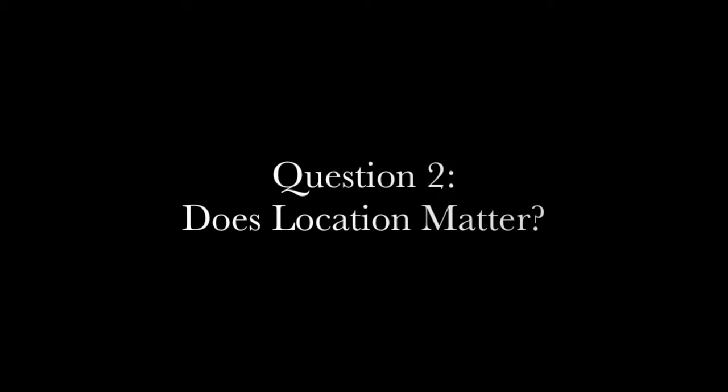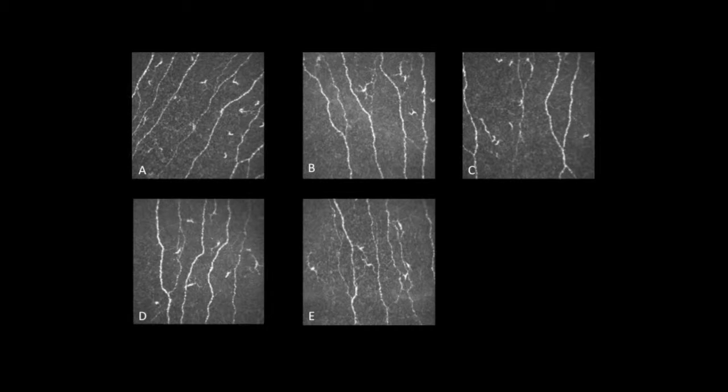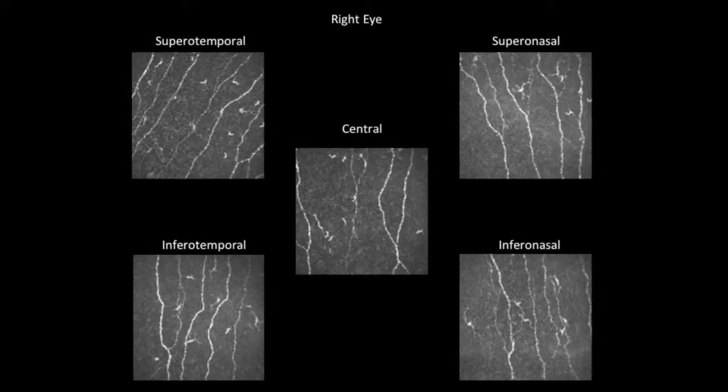The next question is whether different corneal locations have different corneal nerve counts. Here we have five photographs, each from a different location on the cornea. Looking at each grossly, we can see that the nerve counts are obviously different. Looking at each in their corresponding corneal location, we can see that if a confocal imager is off even by microns, it results in a completely different corneal nerve photograph.